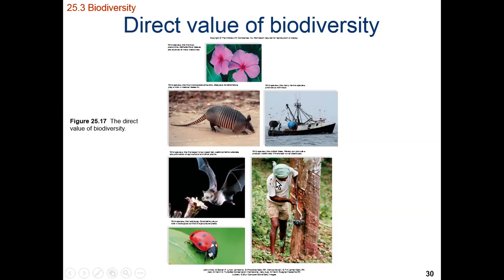Some examples include the periwinkle used for an anti-cancer drug, wild-caught fish for food, the armadillo shell used for producing human goods, rubber produced from a latex tree, a ladybug used to eat aphids and reduce herbivory of crops, and wild pollinators such as fruit bats to pollinate crop species.